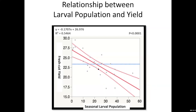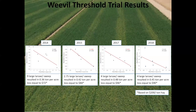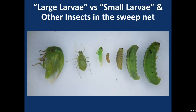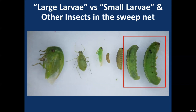We compared population densities to fresh-cut yield across many years. The overall relationship between larval population and fresh-cut yield shows that economic damage can occur at a level between one to five large larvae, depending on the price of hay. In a sweep net you can encounter a whole range of insects; we focus on the large larvae of alfalfa weevil — those with a visible dorsal back line — and our threshold number is based on those large larvae.